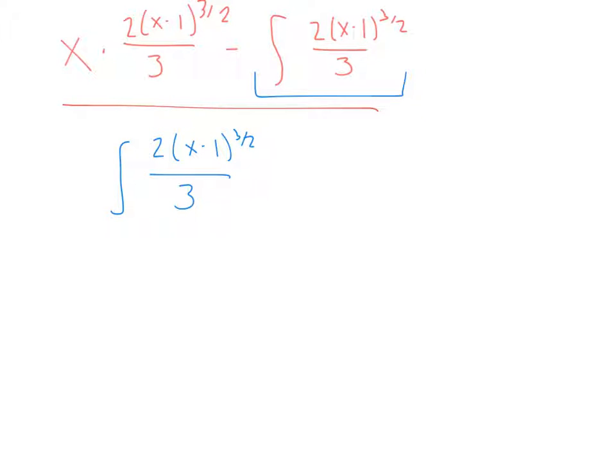And I'm just going to rewrite this as 2 thirds times x minus 1 to the 3 halves here. And now, simple, just take the integral of this, which our exponent rule for integration, we're going to get x minus 1 to the 5 halves over 5 halves, and we've got our 2 thirds out front.